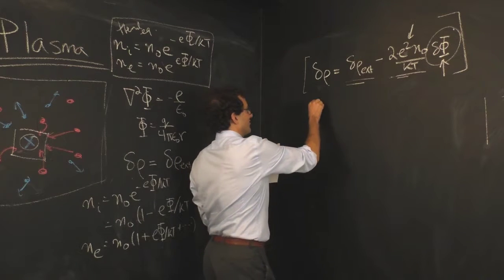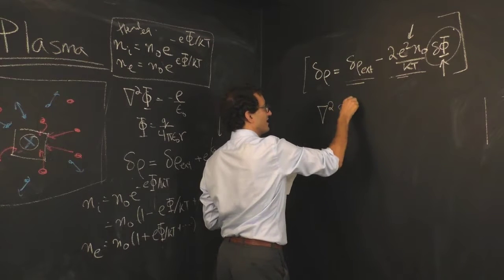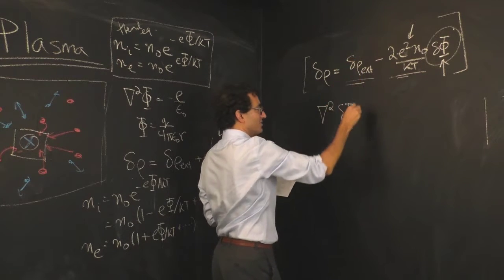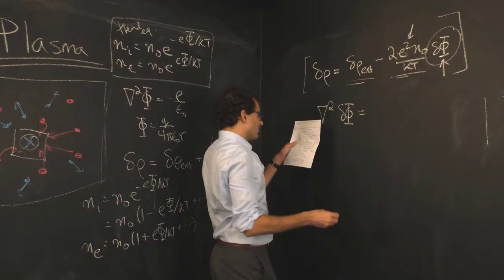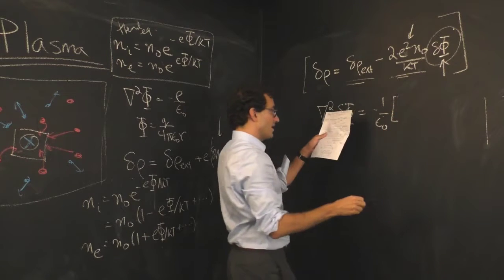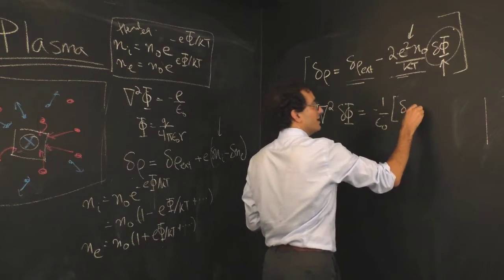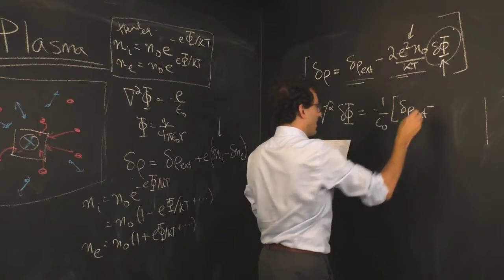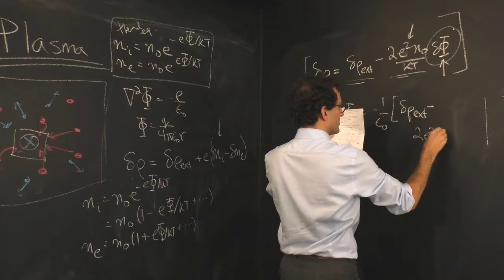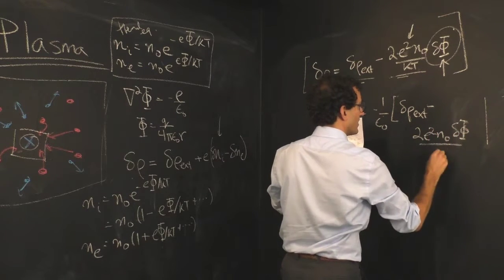Let's see how this non-linear effect works out. We have now the del squared delta phi term, this small perturbation to the potential introduced by the external charge, and that equals negative one over epsilon naught times the external charge effect.